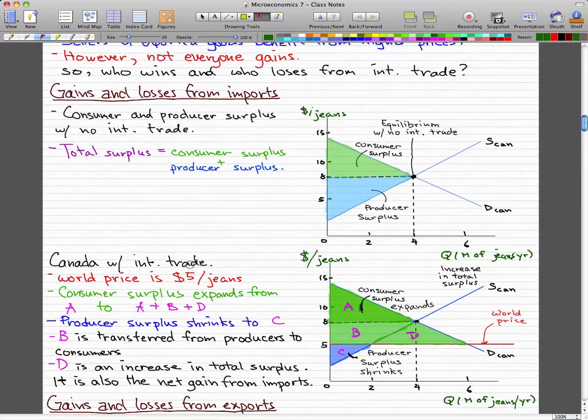The world price is $5 per jeans as we said in the last video. Now, the consumer surplus with this world price imposed, the consumer surplus expands from A.